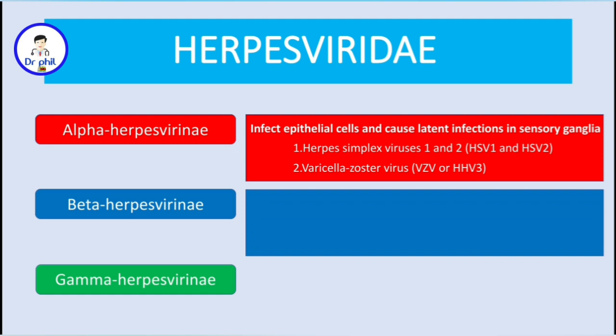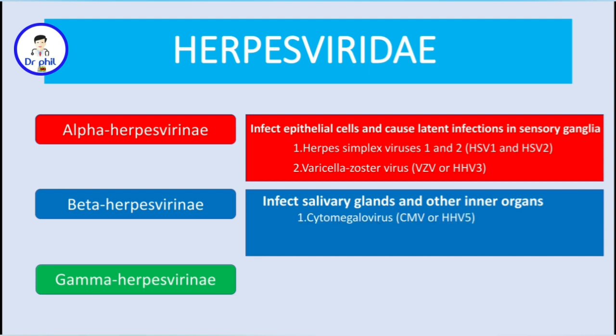On beta-herpesvirinae, these viruses usually infect salivary glands and other inner organs. The species include the cytomegalovirus, or CMV, also known as human herpes virus 5.